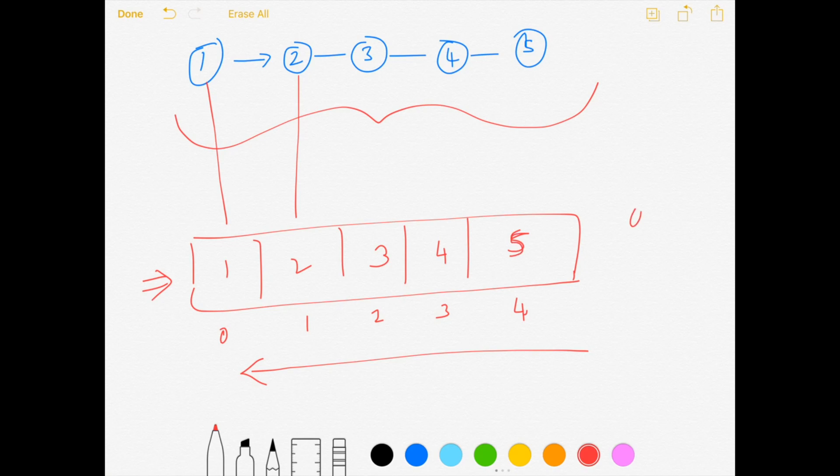The time complexity with this solution is going to be O(n) because we are iterating through the list node first and then iterating through the collection that we have built again. And our space complexity is going to be O(n) because we are maintaining this collection that is holding the values from the list nodes.